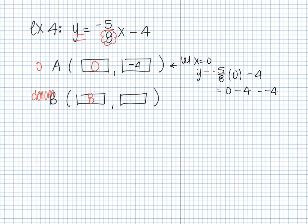For the second point, y equals negative 5 over 8 times 8 minus 4. I picked 8 because it's the denominator so the eights cancel — that's the same as 8 over 1, so the eights cancel leaving negative 5 minus 4, which gives me negative 9. So my second point is (8, negative 9). Type those two points into Hawkes and it will autograph it for you.